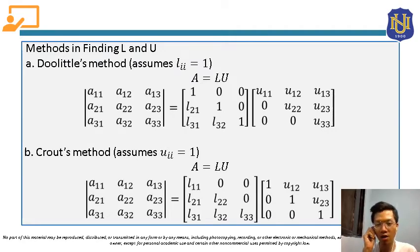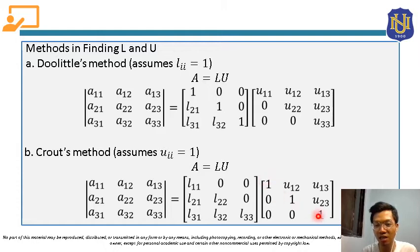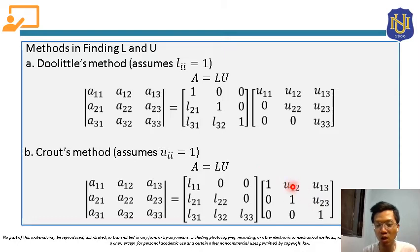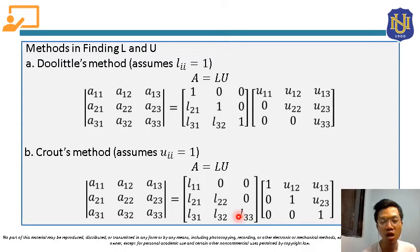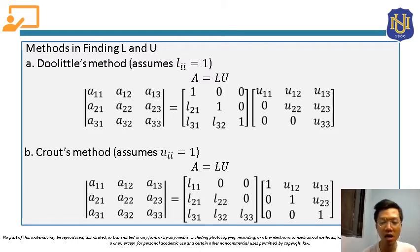The second method is Crout's method. For Crout's method, for the given matrix A, we again factor it into the product LU. The assumption here is that the elements of the principal diagonal of the upper triangular matrix are all 1. The remaining elements are U12, U13, and U23. For the lower triangular matrix, the elements are L11, L21, L22, L31, L32, and L33. Using Doolittle's and Crout's methods, we solve for these unknown elements, and after that, we proceed to the next step.